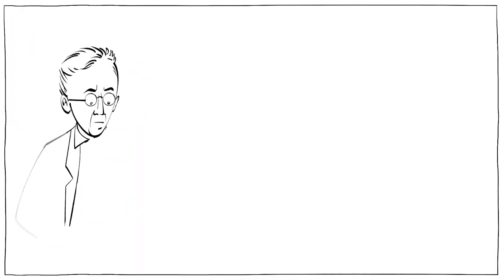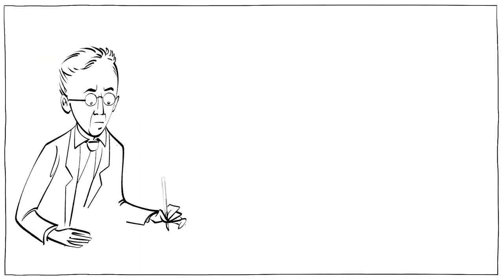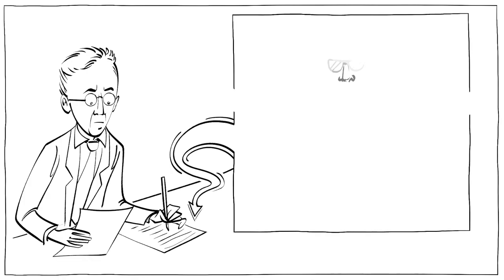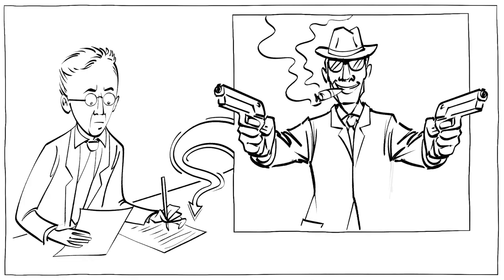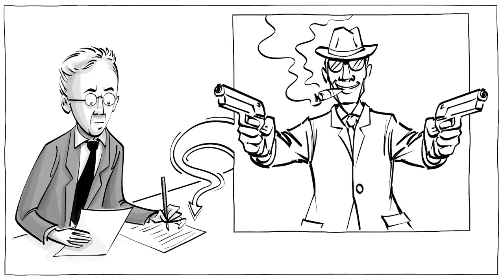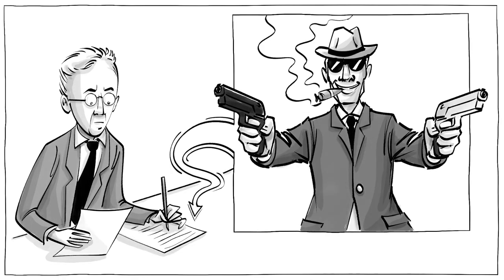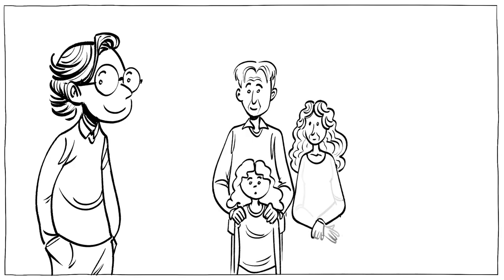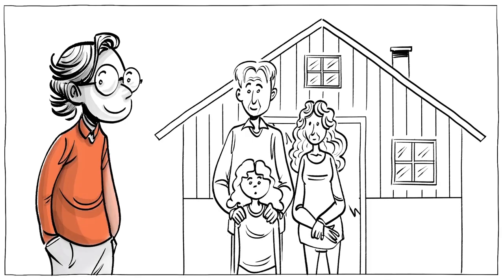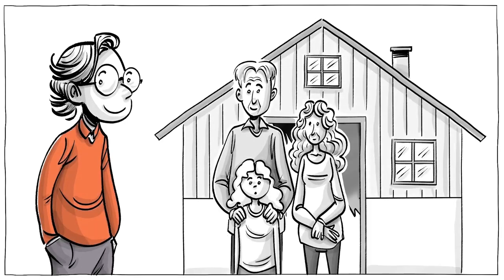Differential association theory is the work of Edwin Sutherland, who spent his life studying principles of criminology and found nine distinct precepts. To learn how this works in real life, let's see how Robin, a shy 14-year-old boy, ends up in jail.